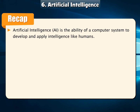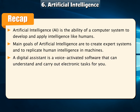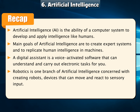Recap: Artificial Intelligence, or AI, is the ability of a computer system to develop and apply intelligence like humans. The main goals of Artificial Intelligence are to create expert systems and to replicate human intelligence in machines. A digital assistant is a voice-activated software that can understand and carry out electronic tasks for you. Robotics is one branch of Artificial Intelligence concerned with creating robots — devices that can move and react to sensory input.